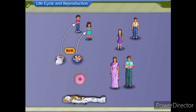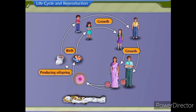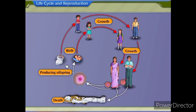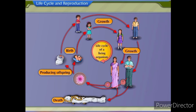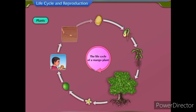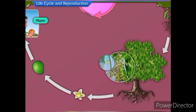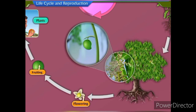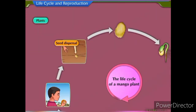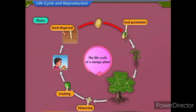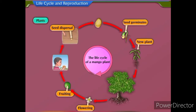These events — namely birth, growth, producing offspring, and death — occur in a cyclic manner one after the other and hence constitute the life cycle of a living organism. For example, in plants, the life cycle begins as the seed germinates and grows into a plant. This is followed by the events of flowering, fruiting, and seed dispersal. The seed germinates to produce new plants and the process repeats itself.